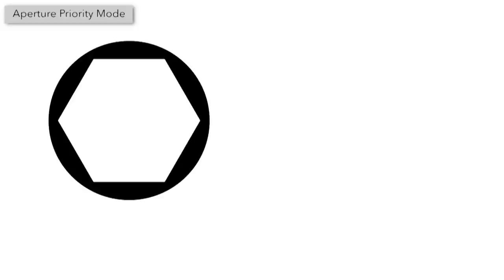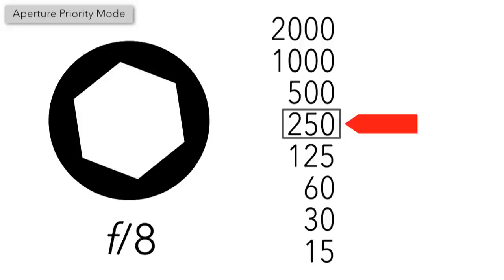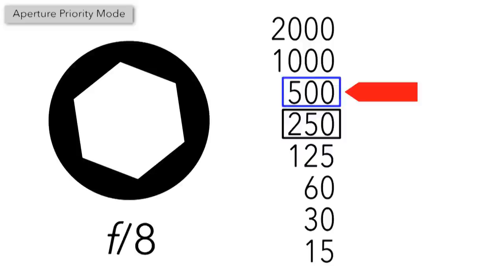To understand this, let's look at how auto exposure bracketing works in aperture priority mode. In aperture priority mode you set the camera's aperture — let's say we've set it to f/8. The camera will use its built-in light meter to set the shutter for a proper exposure; let's say our shutter speed is 1/250th of a second. If we've set our AEB to under and overexpose by one stop, the first correctly exposed photo will be made at f/8 and 1/250th of a second, the second underexposed shot at f/8 and 1/500th of a second, and the third overexposed shot at f/8 and 1/125th of a second.